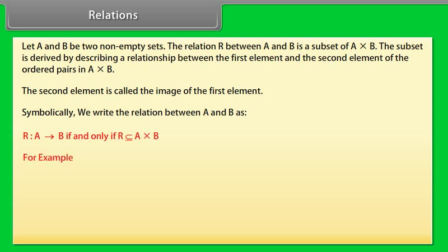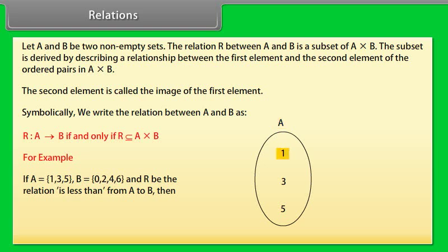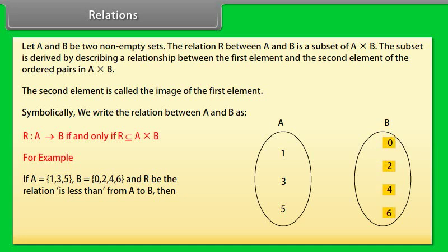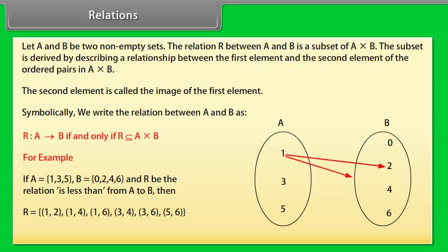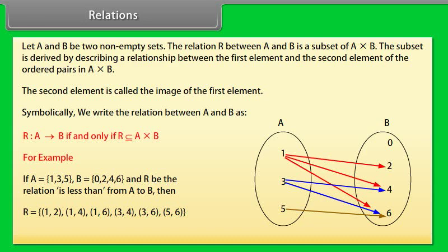Example: If A = {1, 3, 5}, B = {0, 2, 4, 6} and R is the relation 'less than' from A to B, then R = {(1,2), (1,4), (1,6), (3,4), (3,6)}. The relation R from A to B is represented by arrows in a diagram.